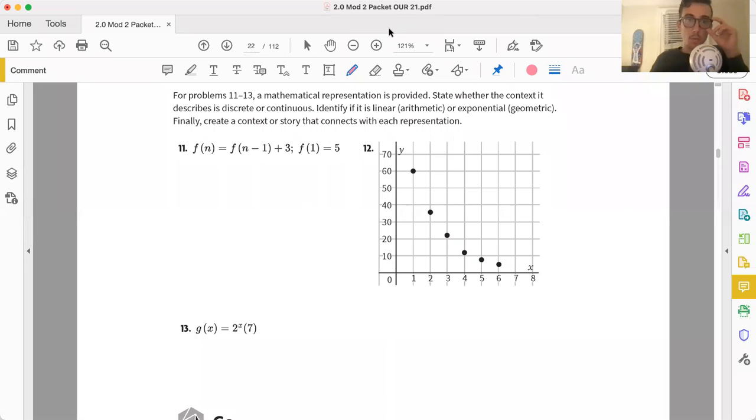We'll take a look at 11 through 13. A representation is provided. We're stating whether the context is discrete or continuous, identified if it is linear, arithmetic, or exponential, geometric. I use quotes because we have seen linear and exponential more recently, but arithmetic and geometric we've been dealing with that since unit one. So they're kind of nicknames, handles, if you will. Let's look at 11.